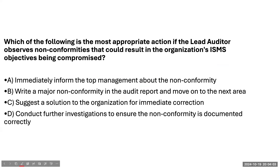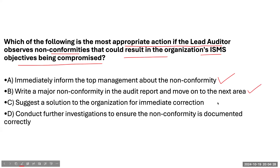The first question: which of the following is the most appropriate action if the lead auditor observes a non-conformity that could result in an organization's ISMS objective being compromised? Should the lead auditor immediately inform top management? Should they write a major non-conformity in the audit report and move on? Should they suggest a solution for immediate correction? Or should the lead auditor conduct further investigation to ensure the non-conformity is documented correctly?